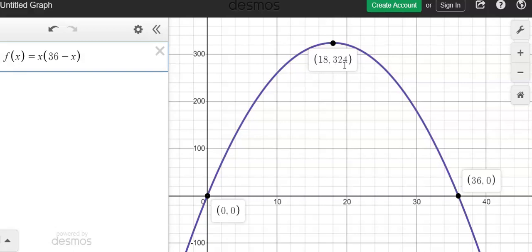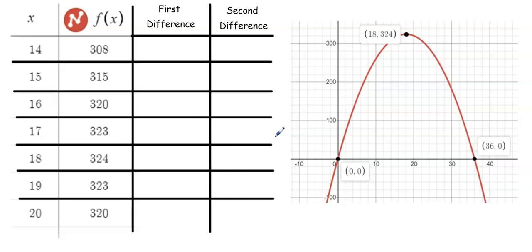then the maximum area for that rabbit pen, that rectangular rabbit pen, will be 324.